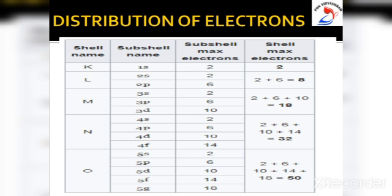For the fourth energy level, n = 4: 2 × 4² = 2 × 16 = 32. Thus, the maximum number of electrons that can be accommodated in the first energy level is 2, for the second is 8, for the third is 18, and for the fourth is 32. The first energy level is K shell, second is L shell, third is M shell, and fourth is N shell.